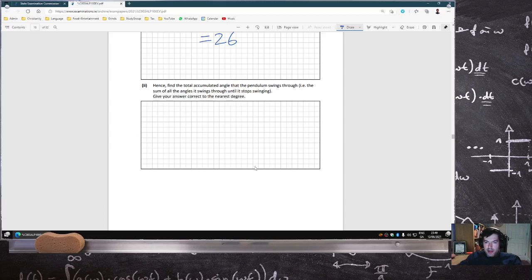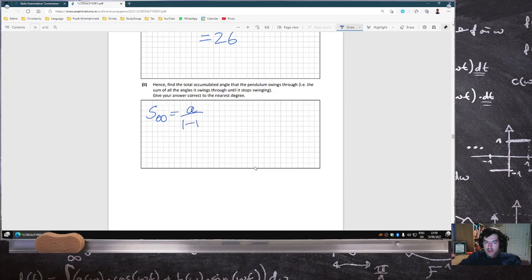Find the total cumulative angle theta of swing until it stops swinging, so the infinite. So S infinity is A over 1 minus R, which will be 26 degrees over 1 minus 0.9, which is 260 degrees.